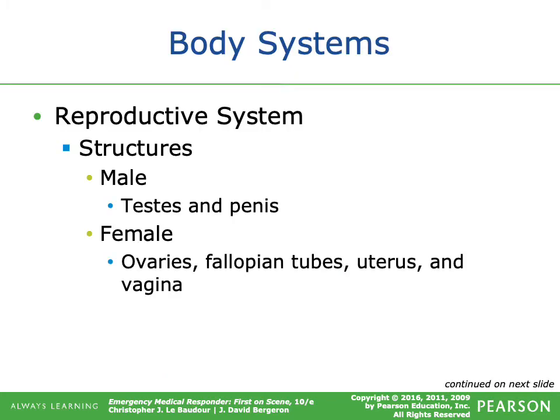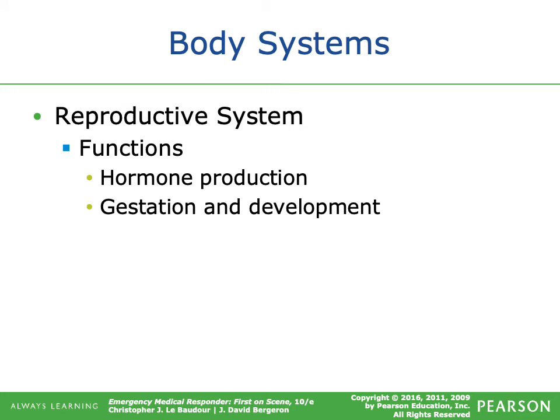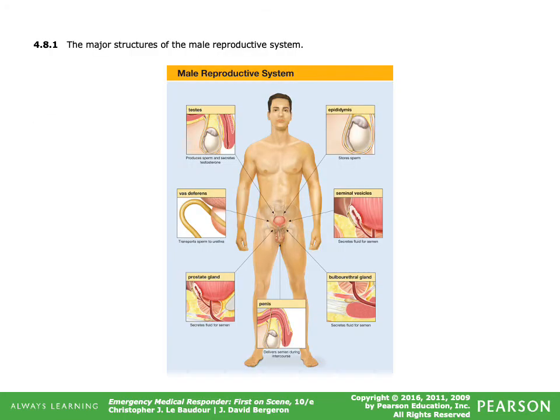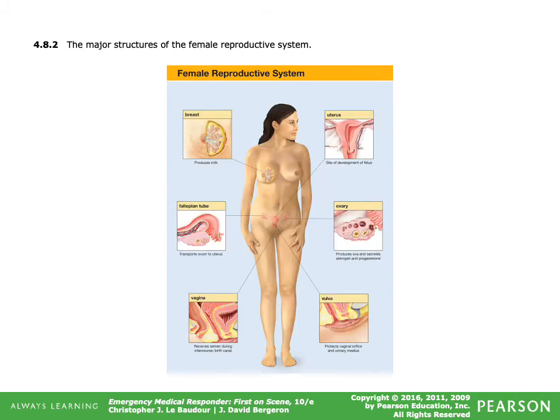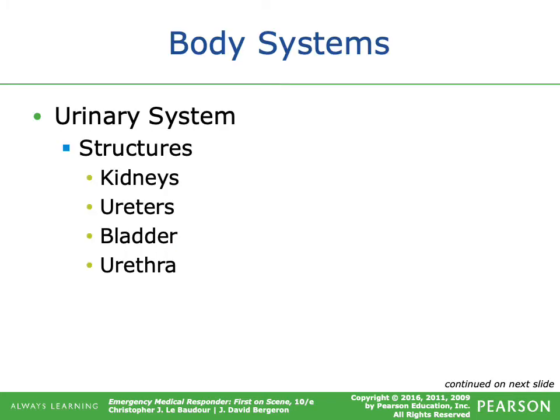The reproductive system is split into male and female. The male reproductive system includes the testes and penis. The female reproductive system consists of the ovaries, fallopian tubes, uterus, and vagina. Functions include hormone production, gestation, and development.